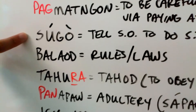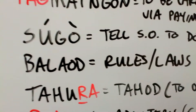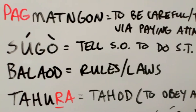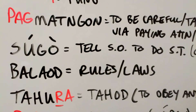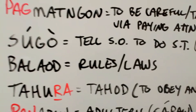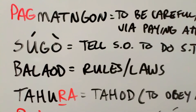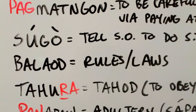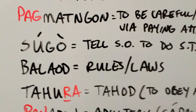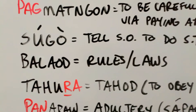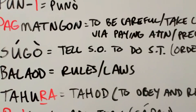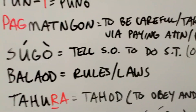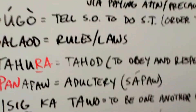Don't get sugo confused with this next word — bala'od. Bala'od just means rules and laws. This can be rules and laws that are set in stone or official rules and laws that were written, or just rules and laws that people have been following. This is different from sugo — sugo is things that people tell you to do, versus bala'od, which really is a law that we need to abide by and follow. Bala'od is the rules and laws — it can be from an organization, a country, a political level, or administrative level.